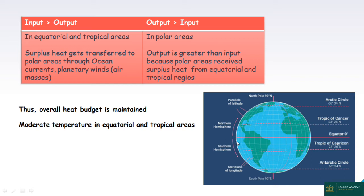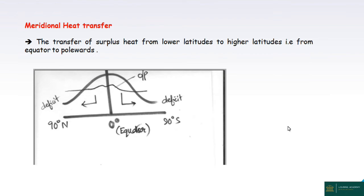This can be explained by the surface conditions of equatorial and tropical regions. The polar regions receive transferred heat from lower latitudes. The polar area experiences a heat deficit. We need to determine how the output is greater than the input at the poles. In the equatorial and tropical areas there is a surplus, while polar areas have a deficit, and heat exchange occurs. This process maintains moderate temperatures globally. This concept is called meridional heat transfer — the transfer of surplus heat from lower latitudes to high latitudes, from equatorial to polar regions.